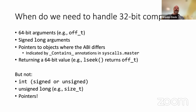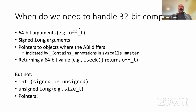So when do we need to handle 32-bit? This is actually the reason I decided to give this talk — people kept getting it wrong. Any time you have a 64-bit argument you need to handle it, because it won't fit in one register and has to be split up. This is mostly offset_t but there are a couple of other types. You also need to worry about signed long arguments: unsigned long arguments get padded out with zeros, but signed ones need sign extension so all the upper bits become ones for negative values.